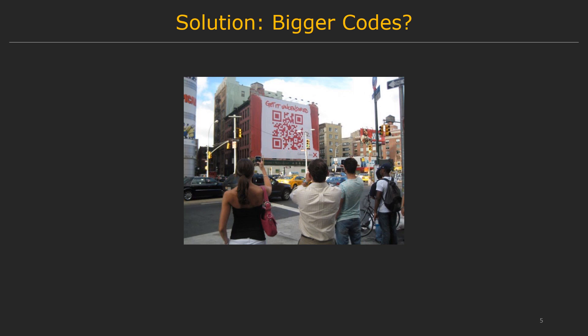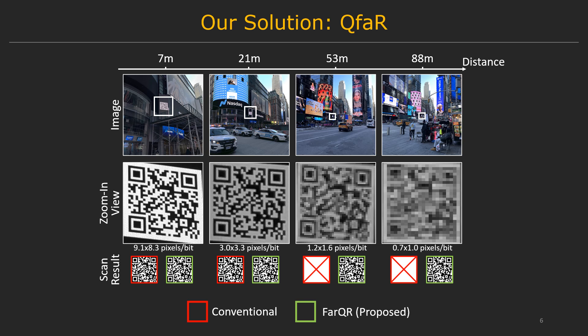One idea is to make the code as big as possible, which is not always the best idea. Our solution is a novel algorithm and system called QFaR. Here are images we captured at Times Square, trying to scan a code at different distances. Conventional QR code scanners only work at 20 meters, but QFaR works even at around 90 meters, even when each black or white bit is about one pixel. QFaR offers a four to five times improvement depending on imaging conditions.